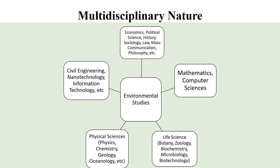Environmental studies also has a multidisciplinary nature. Multidisciplinary nature means it involves many various different fields of study into one. For example, economics, political science, history, sociology, and other social sciences help us in making people aware about environmental issues. Similarly, mathematics and computer science help us in creating models for better management — such as earthquake prediction or cyclone prediction — with various algorithms.